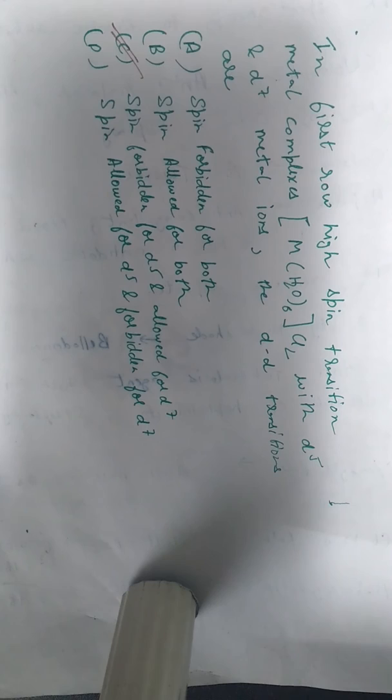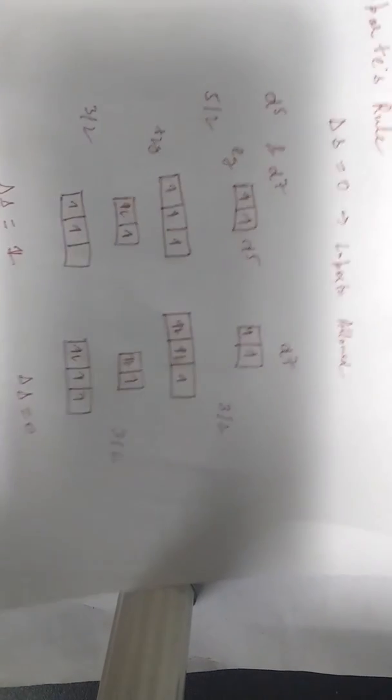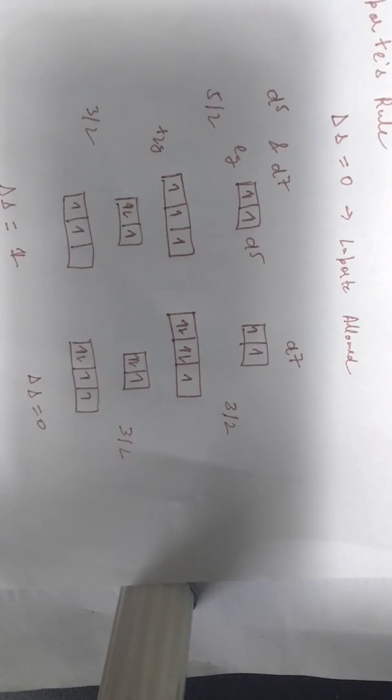Now you can actually also calculate it for low spin transition complexes, there is nothing complicated about it. You just need to draw the T2G and EG levels and see whether there is a spin change taking place or not, right?